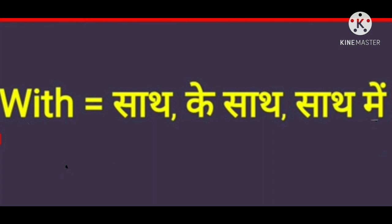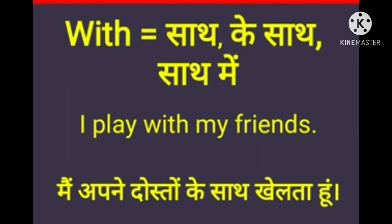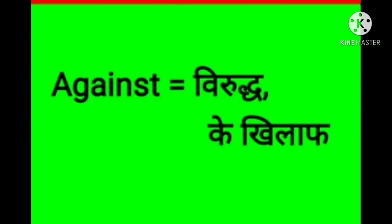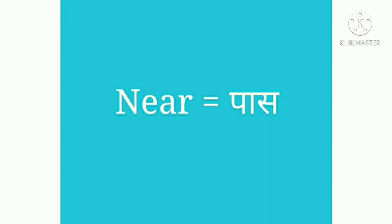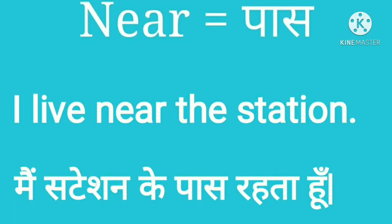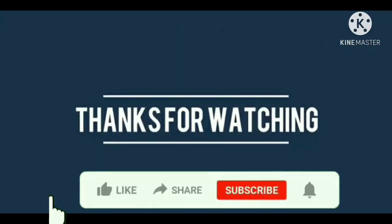Next is 'with'. With means 'saath' or 'ke saath' (together with). Example: I play with my friends — main apne doston ke saath khelta hoon. Next is 'against'. Against means 'virudh' or 'ke khilaf' (against). Example: He always complains against me — vah hamesha mere virudh shikayat karta hai. Next is 'near'. Near means 'paas' (close to). Example: I live near the station — main station ke paas rehta hoon, matlab mera ghar station ke paas hai.